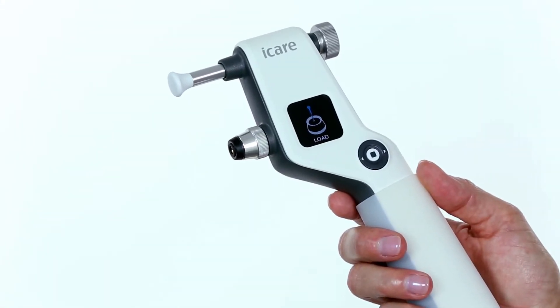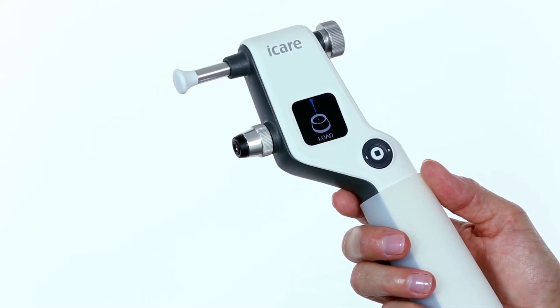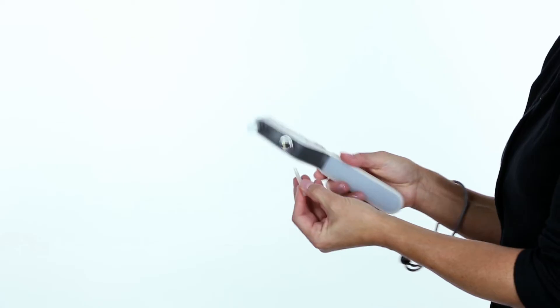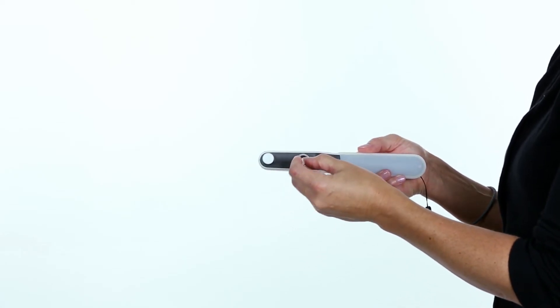Load the probe into the tonometer when the display screen shows Load Probe. Open the probe tube by removing the cap and insert the single-use probe into the probe base.